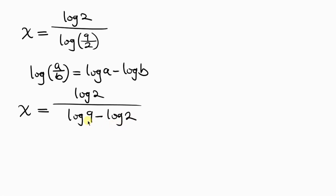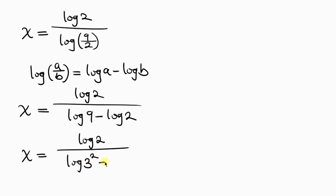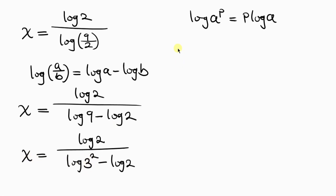Next we simplify log 9: since 9 equals 3 squared, log 9 becomes 2 log 3 by the power rule of logarithms. So x equals log 2 over 2 log 3 minus log 2.